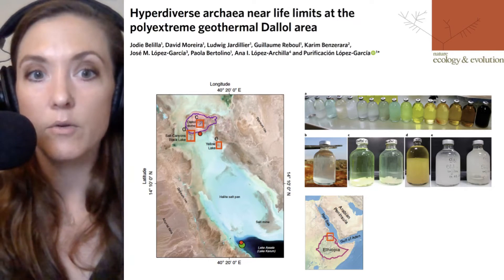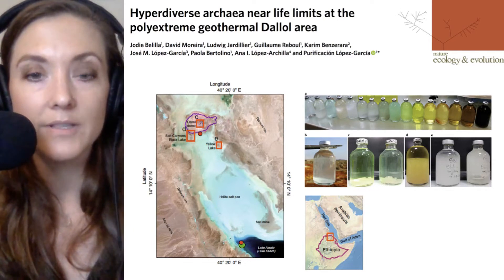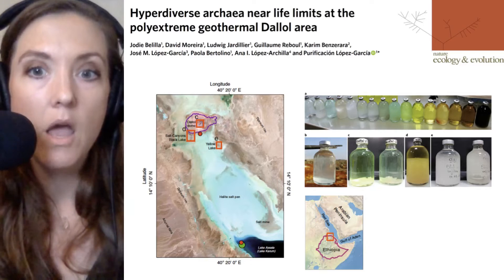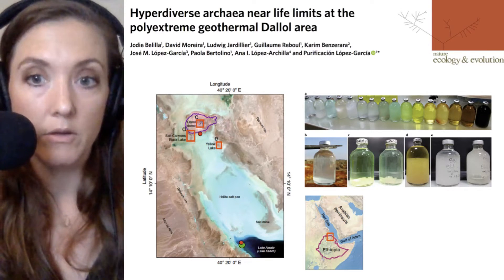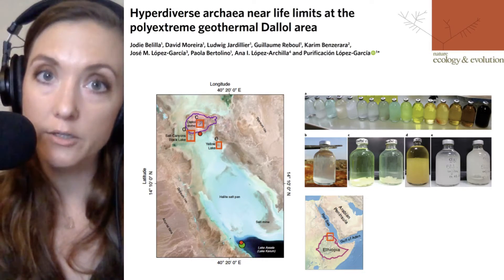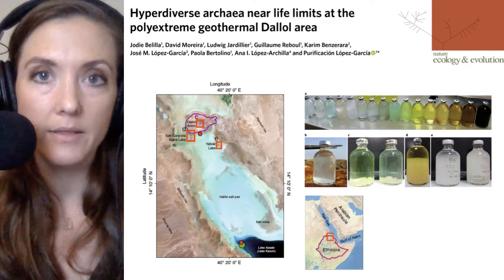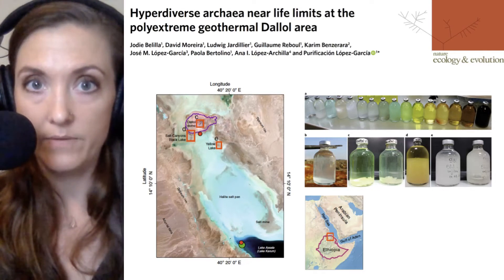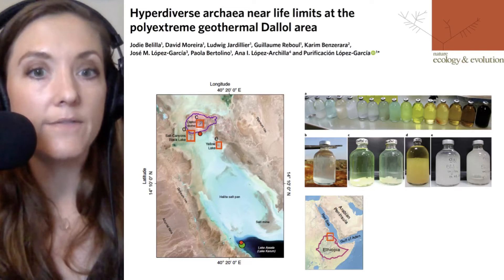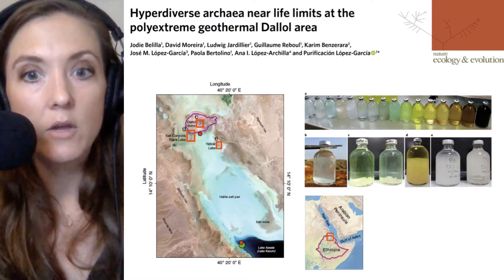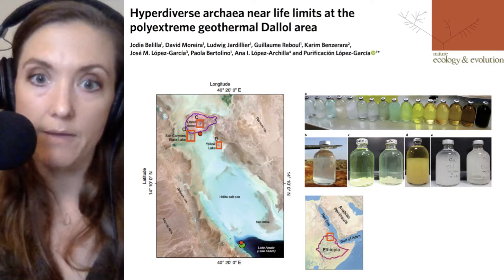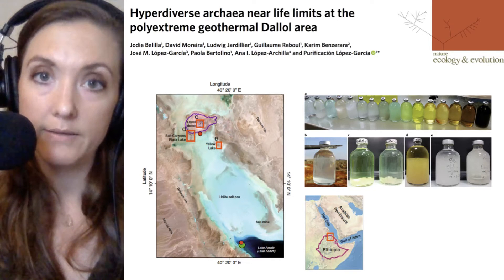In a second category, the salt canyons and plains of the Dalal and Lake Assal have sodium chloride — they're supersaturated as well, but with much lower iron content, leading to different selective forces in those environments. Finally, there is the environment of the yellow and the black lakes, which has very high salt concentrations, but these are magnesium and calcium salts.